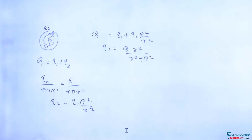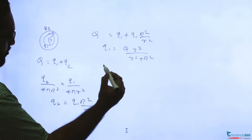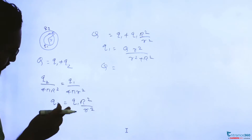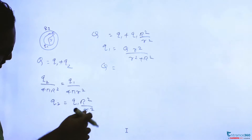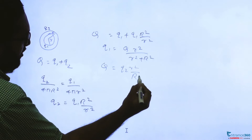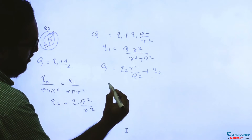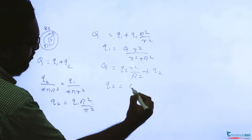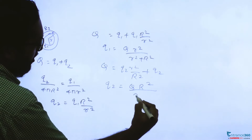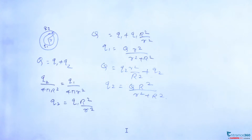In a similar way, we can write Q2 also. So Q2 in terms of Q will be Q times R² by (r² + R²). From here, Q2 equals Q·R² by (r² + R²). This is the value of Q2.